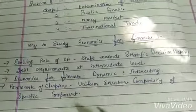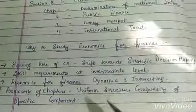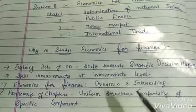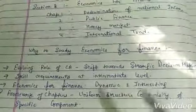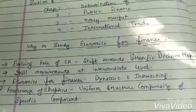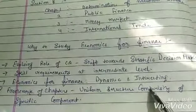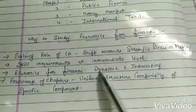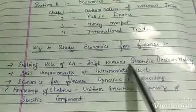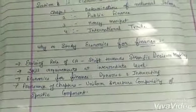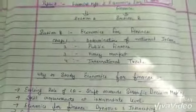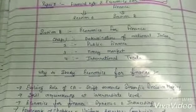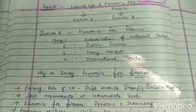अगर कोई financial manager को कोई decision लेना पड़ रहा है, तो उसमें economy की जो complexity है वो भी काफी हद तक अपना प्रभाव डालेगी। इसलिए भी Economics for Finance पढ़ना जरूरी है — ताकि वो economics के tools को use करके finance की problems को solve कर सके। Fourth reason है: framework of chapters — a uniform structure comprising specific components। Chapters 1 से 4 पढ़ने के बाद आपको India की trade policy, foreign capital investment instruments, और international trade कैसे काम करता है — यह समझ आएगा।